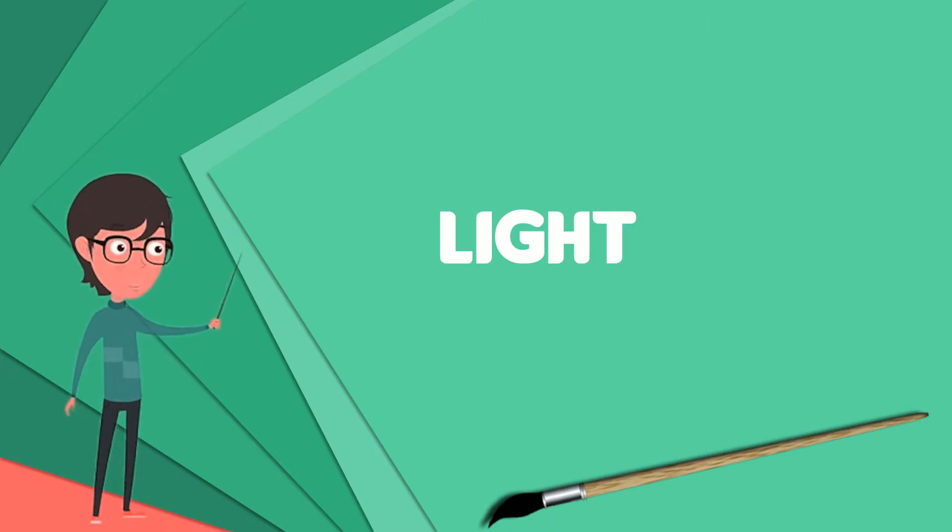Visible light is usually defined as having wavelengths in the range of 400 to 700 nanometers, or 4.00 times 10 minus 7 to 7.00 times 10 minus 7 meters, between the infrared and the ultraviolet. This wavelength means a frequency range of roughly 430 to 750 terahertz.